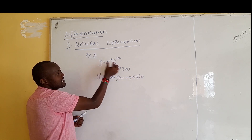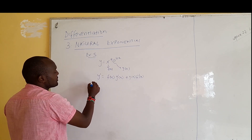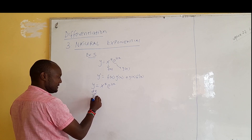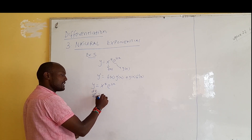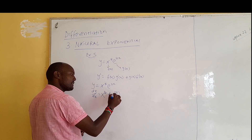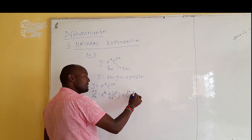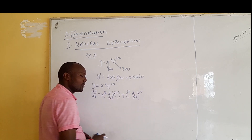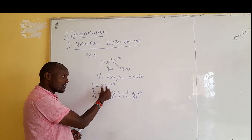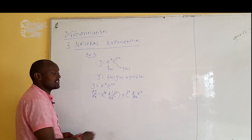So we hold this one constant, differentiate the other one, then join them together using the addition sign. Our function y equals x⁴·e^(2x). To get the first derivative: hold x⁴ constant and differentiate e^(2x), plus hold e^(2x) constant and differentiate x⁴. That's how we apply the product rule.